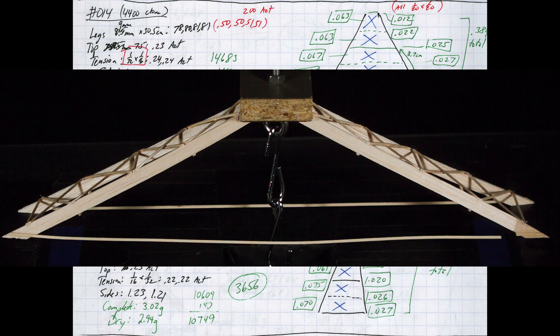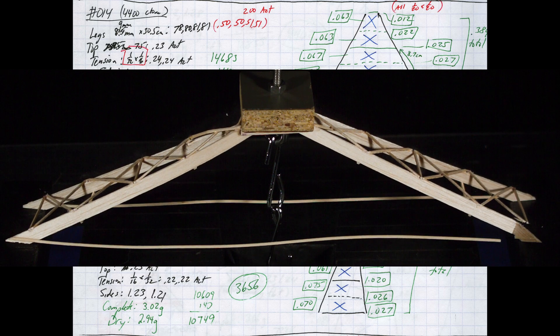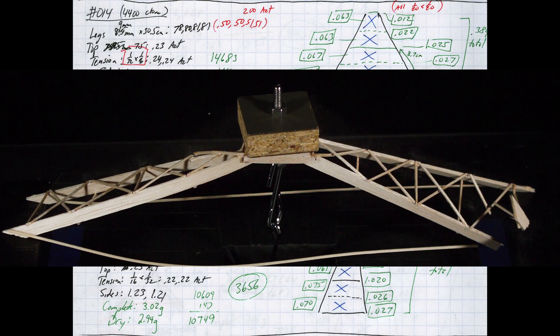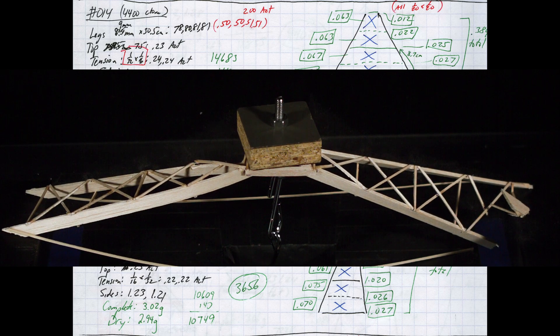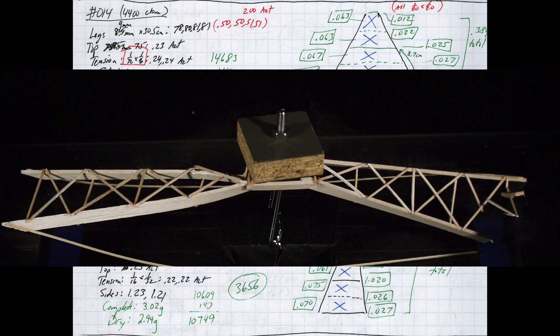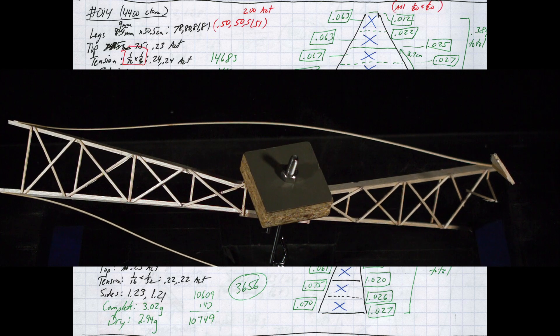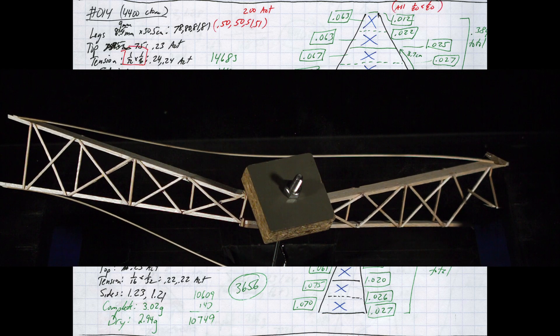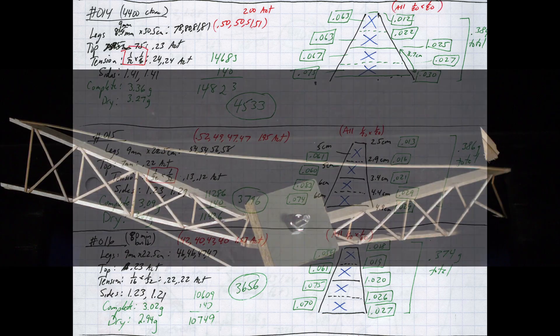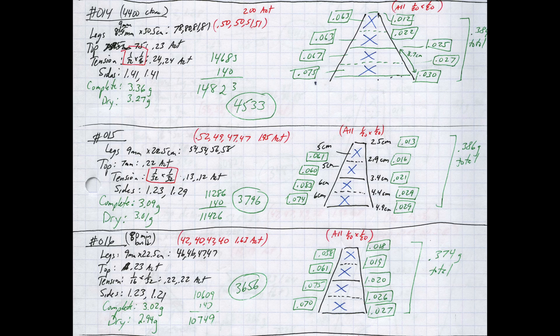This time, you can see that the failure happens at the right front lower leg. It may look like a tension failure, but if you go frame by frame, the leg breaks first, which then causes the tension member to split apart. I was now faced with the situation that simply reducing the tension mass or the leg mass wasn't enough to get a great bridge at 3 grams.